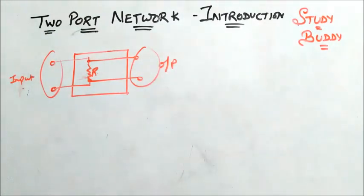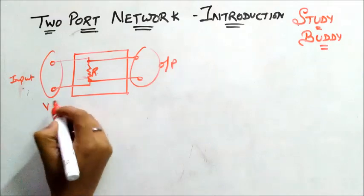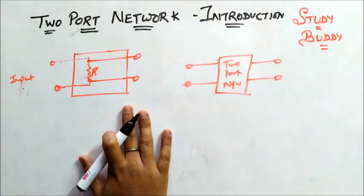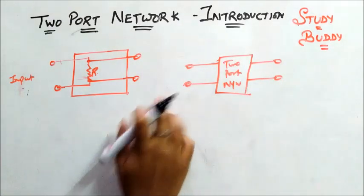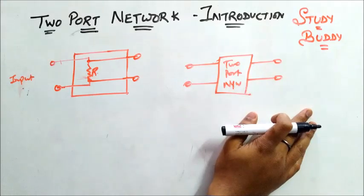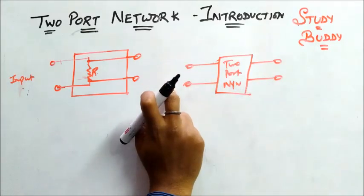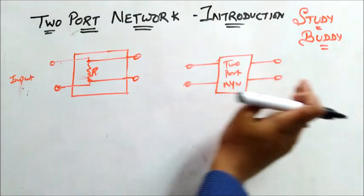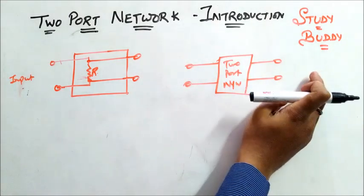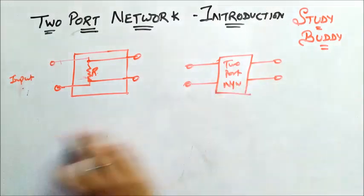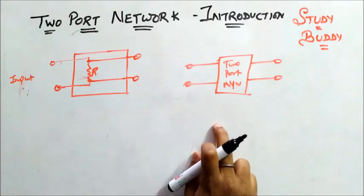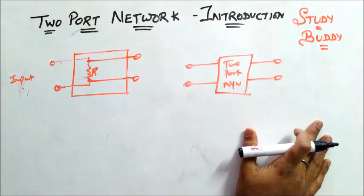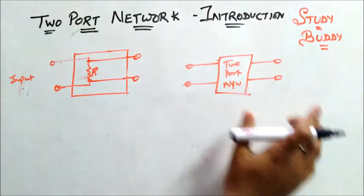Now I hope this concept of the network is clear — what is the relation between the terminals. If I have a two port network, I will be having two ports on the input side and also two on the output side. There won't be any case like I have two ports for the input and one port for the output. That case won't exist.